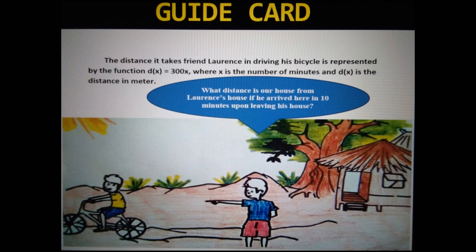Guide Card: The distance it takes friend Lawrence in driving his bicycle is represented by the function d of x equals 300x, where x is the number of minutes and d of x is the distance in meters. What distance is our house from Lawrence's house if he arrived here in 10 minutes upon leaving his house?